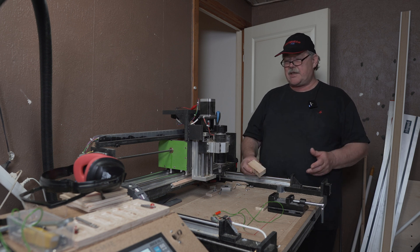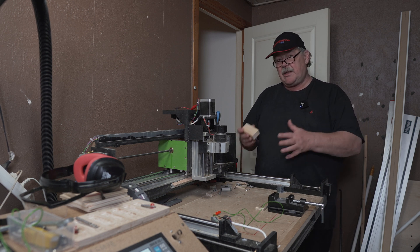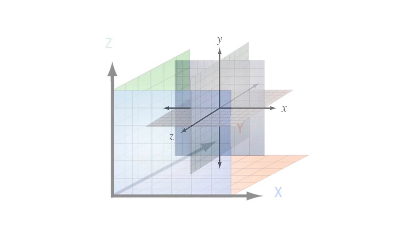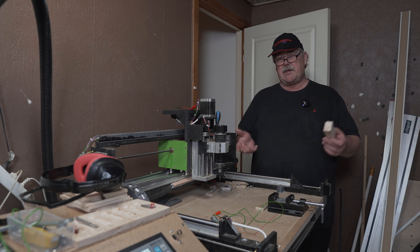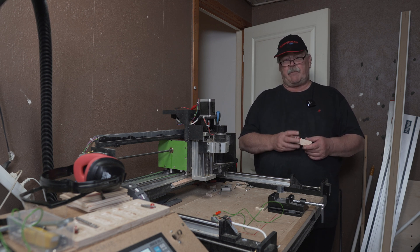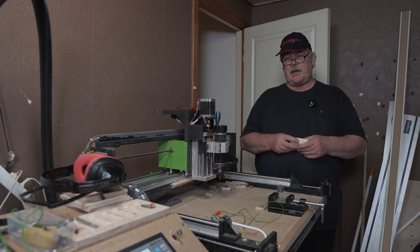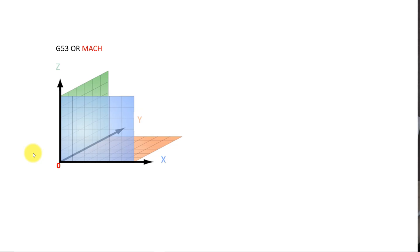We can have up to several coordinate systems within the machine coordinate system. They are called G54, G55, G56, up to G59, and the machine coordinate itself is called either MAC or G53.